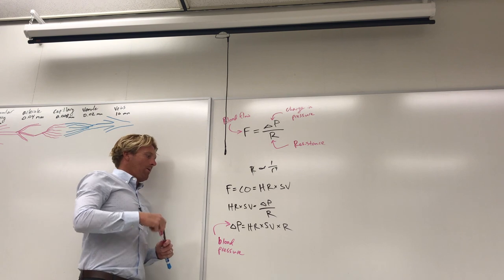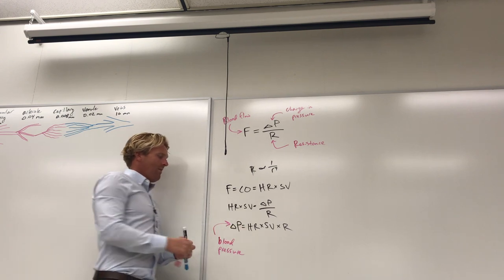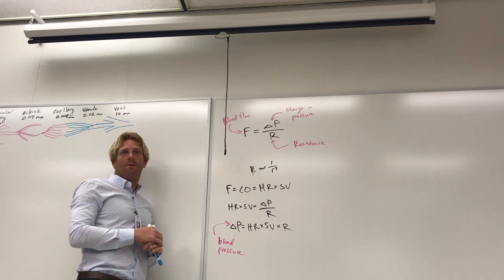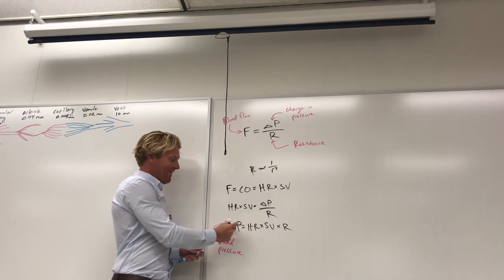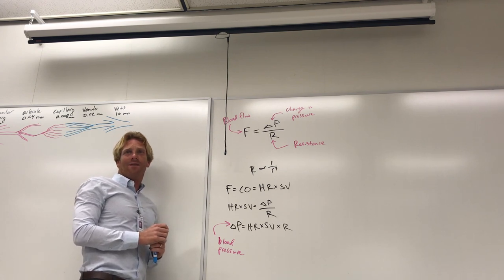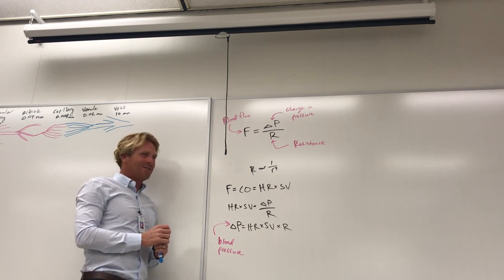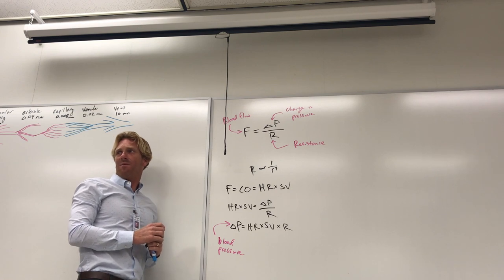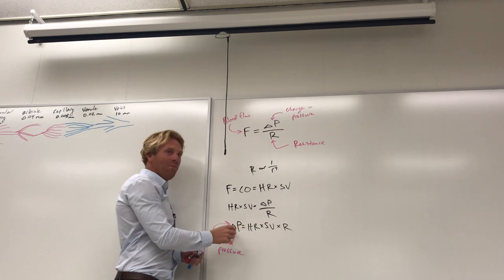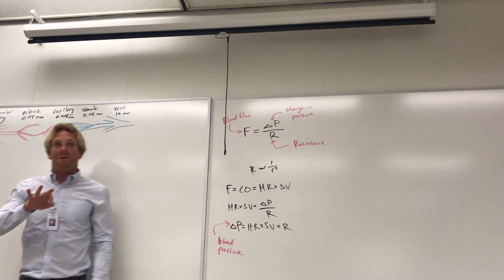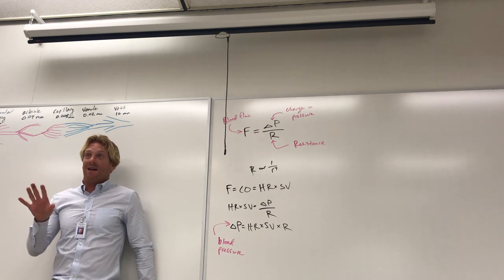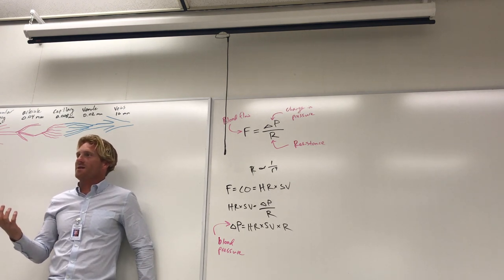Using the equation ΔP = HR × SV × R: if heart rate goes up, blood pressure goes up; if stroke volume goes up, blood pressure goes up; if resistance goes up, blood pressure goes up. Any of these factors increasing will increase blood pressure. Remember this equation for predicting how blood pressure changes in different situations.